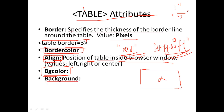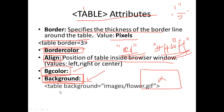The background attribute is used to set a background image for the table, similar to how the body tag uses background image. We use this attribute to define a background image for the table. For example, table background equal to images/flower.gif — specifying a GIF format image file path.